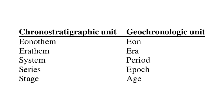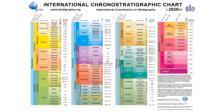Chronostratigraphic units correspond to geochronological units, or time intervals. Whereas the chronostratigraphic units are bodies of rock that exist today, geochronological units are time intervals that transpired in the past. The geochronological units include the following, from smallest to largest: ages, epochs, periods, eras, and eons. Eons are the longest time intervals; ages are the shortest. As you can see, chronostratigraphic units have corresponding geochronological units. This makes sense — the purpose of the geologic timescale is to relate the rocks we see on Earth in the present to time intervals that transpired in the past.